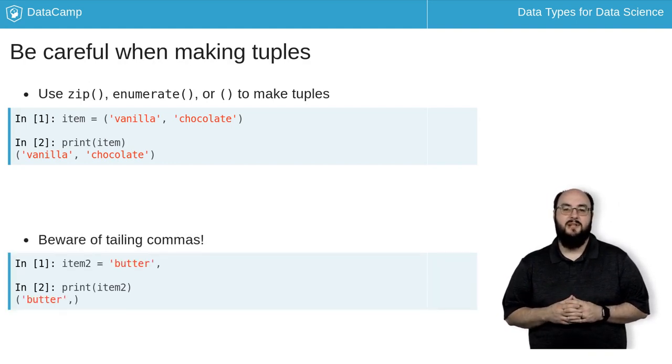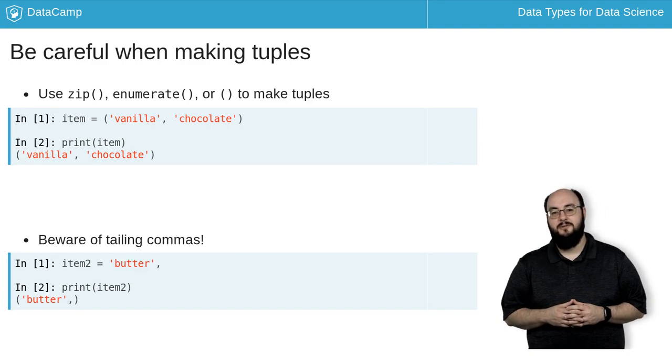If we accidentally end an assignment line with a comma, we can create a tuple. And this can have some very undesirable side effects further down in our code. So keep this in mind if you get a tuple where you don't expect it.